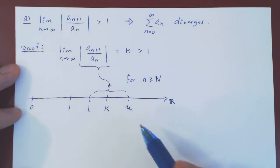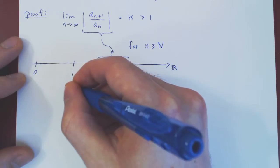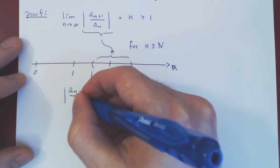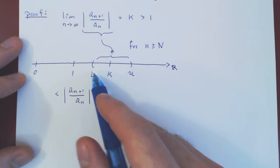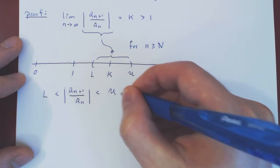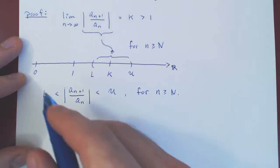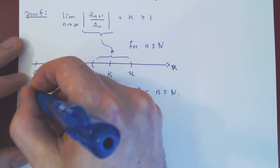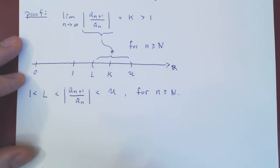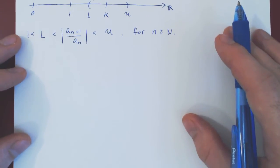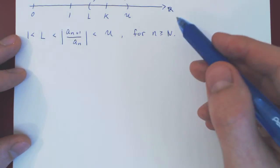Let's rewrite this in terms of an inequality. We have that |a_{n+1} / a_n| is strictly between L and U, as we have an open interval. This holds for values of n that are large enough. The key point is that L is also strictly larger than 1. So we can focus on the inequality |a_{n+1} / a_n| > L, which is valid for n = N, N+1, and so forth.